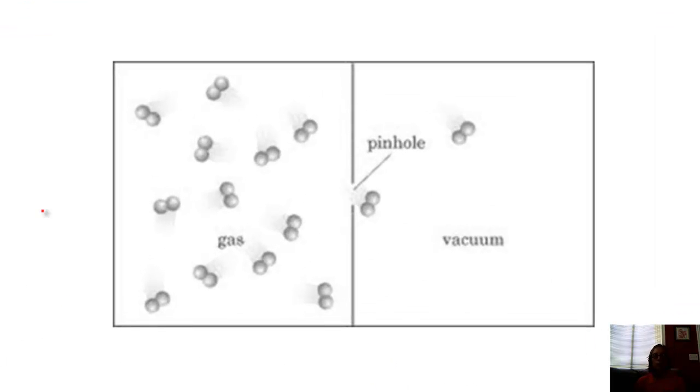So here's a picture of effusion just to give you an idea. We've got this chamber with some gas in it, we've got a small pinhole, and it's going into a vacuum, and we're going to measure the rate at which the gas passes through the opening.